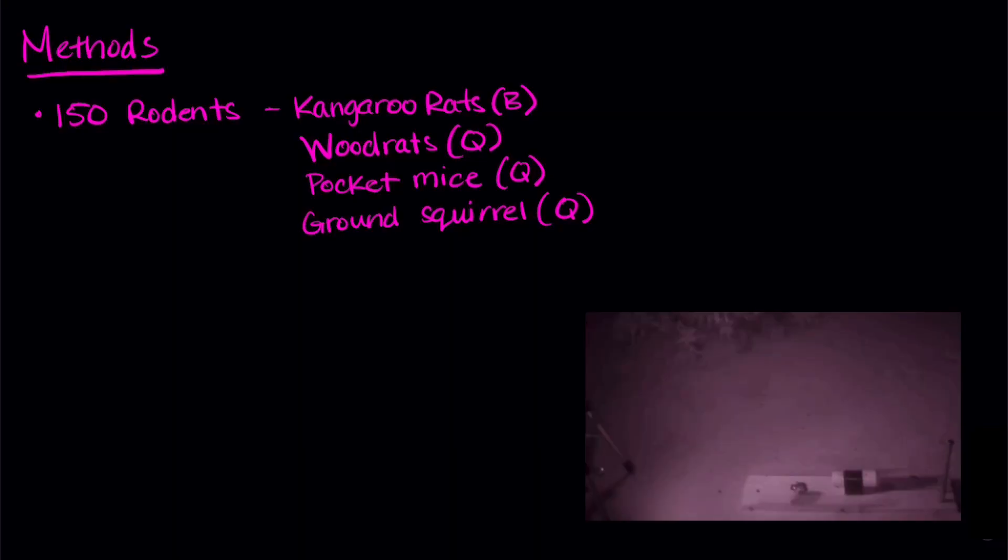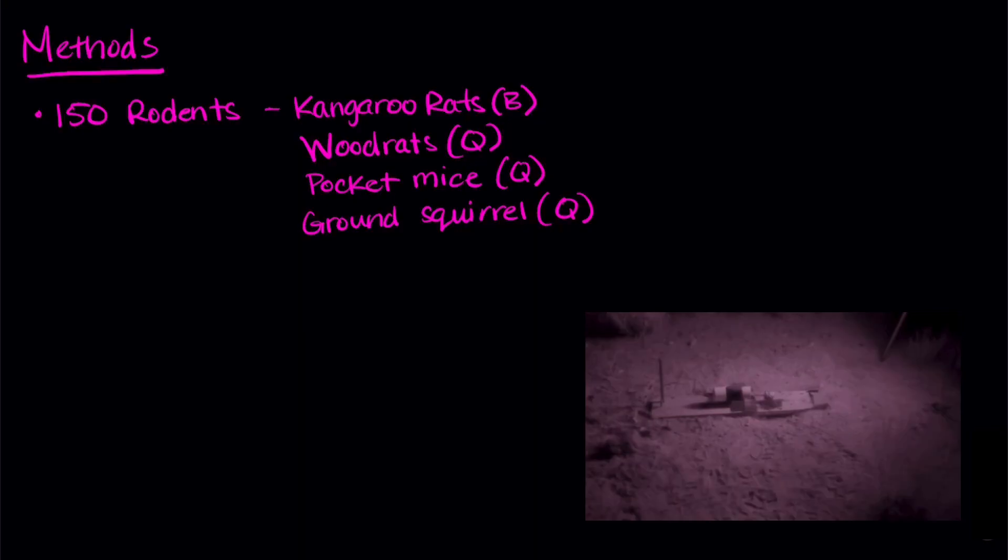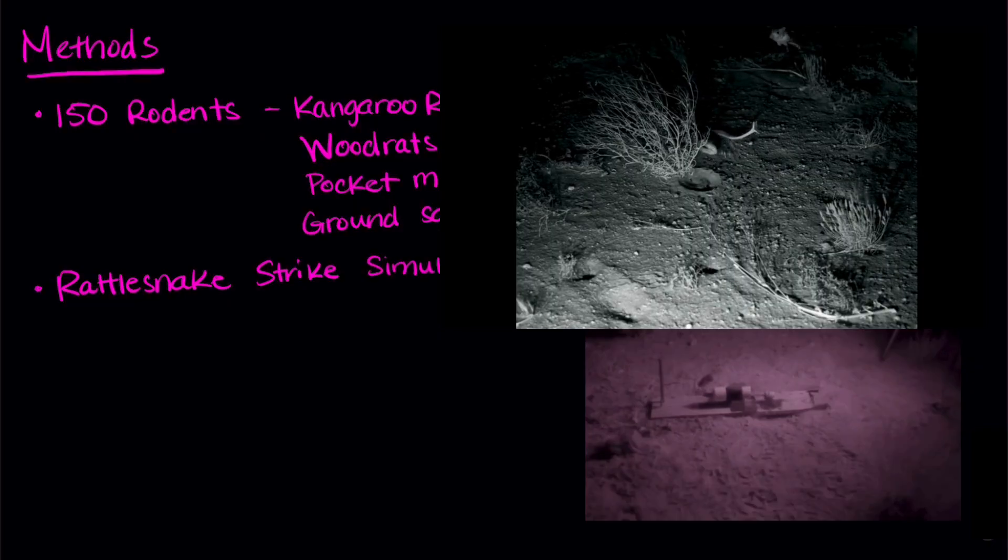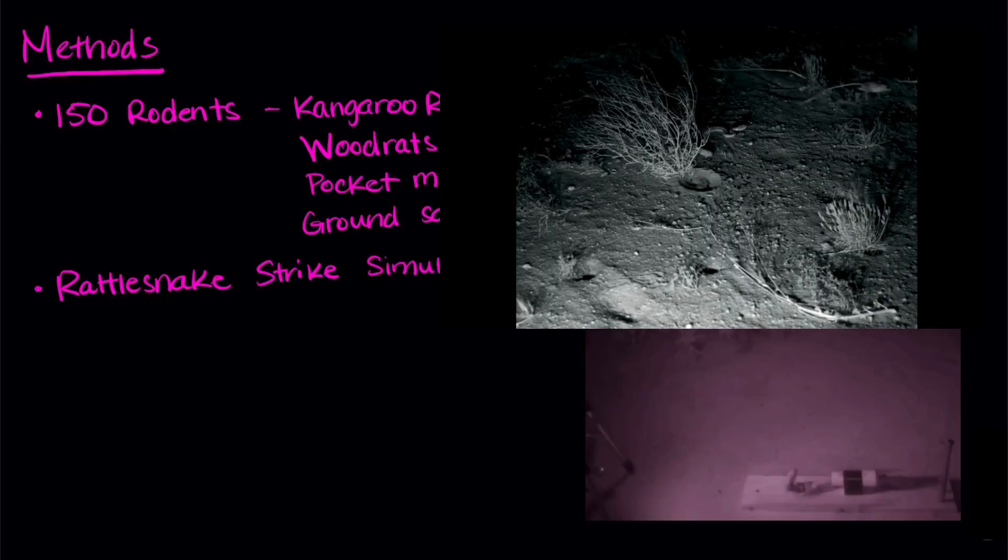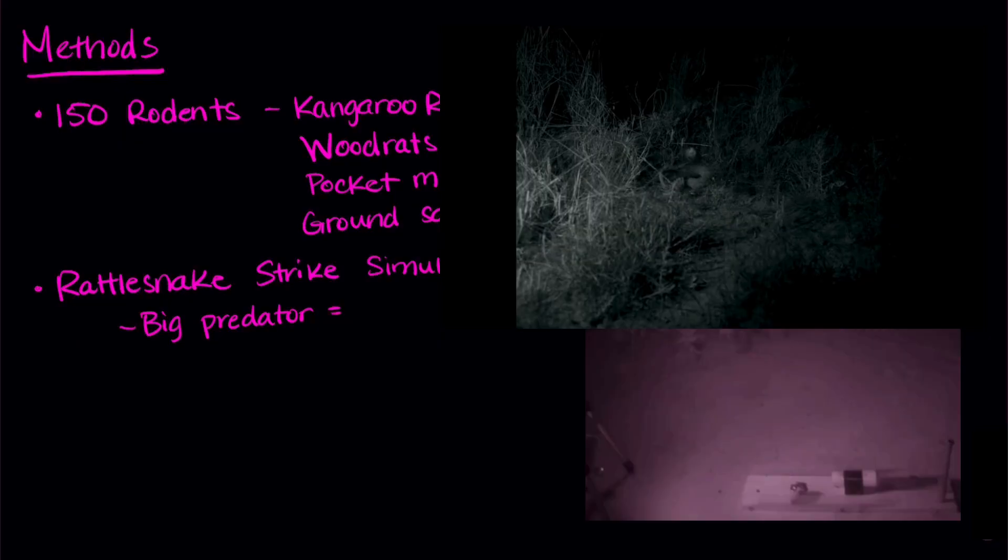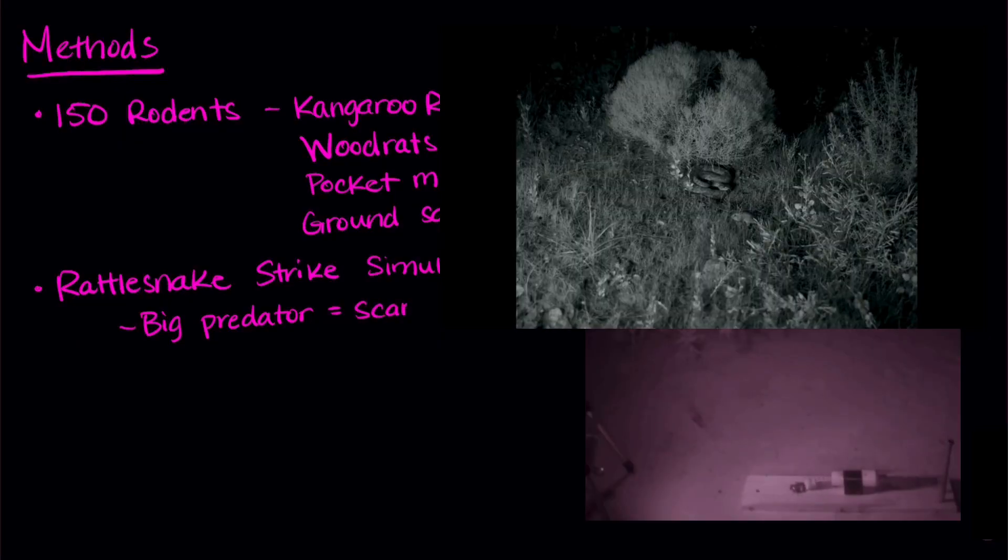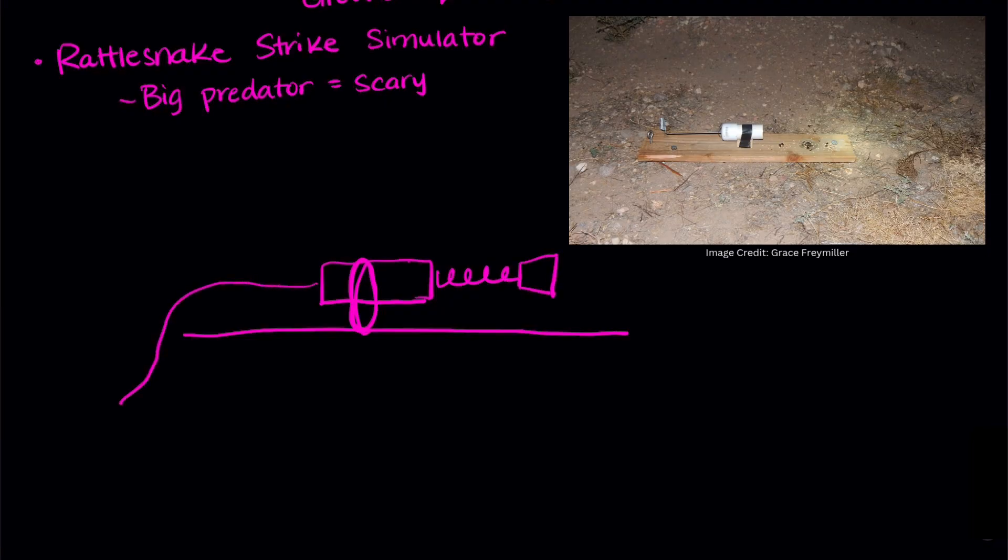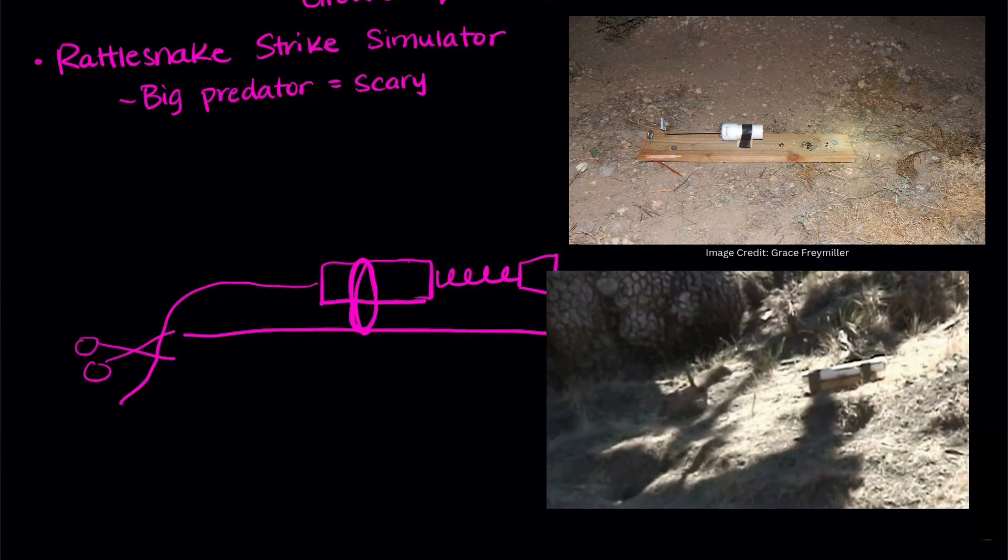Then they did something a little sneaky. They scared them to see what they did, but in a scientific way. They set up what they call a rattlesnake strike simulator. Try saying that three times fast. The rattlesnake is a big predator of rodents in these habitats. So the rattlesnake strike simulator is an appropriate way to see what these prey do. The simulator is a plastic tube with a cork on a spring. It's attached to a string so the researcher can cut the string and the cork springs toward the rodent and scares them. So take a look at the video to see it in action.